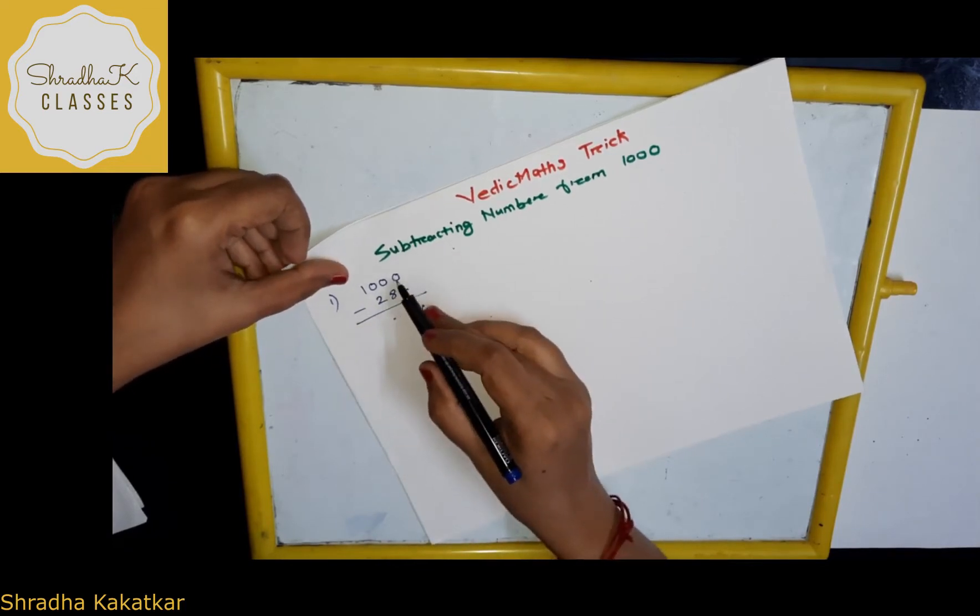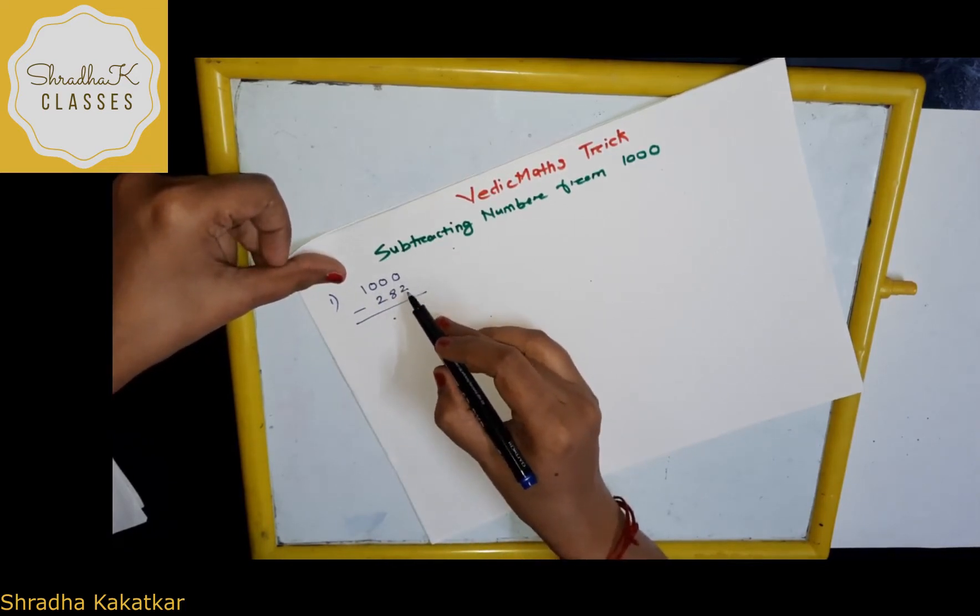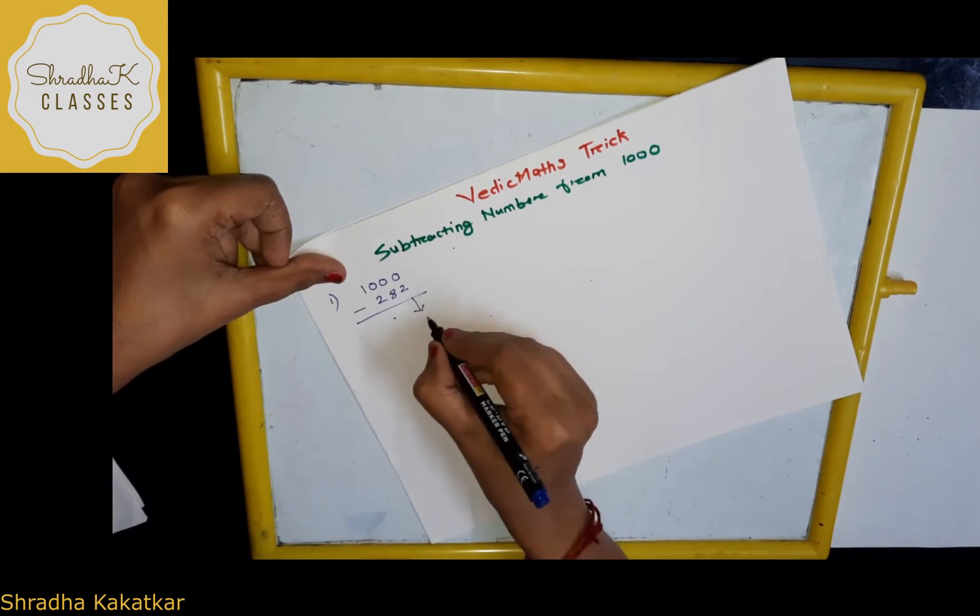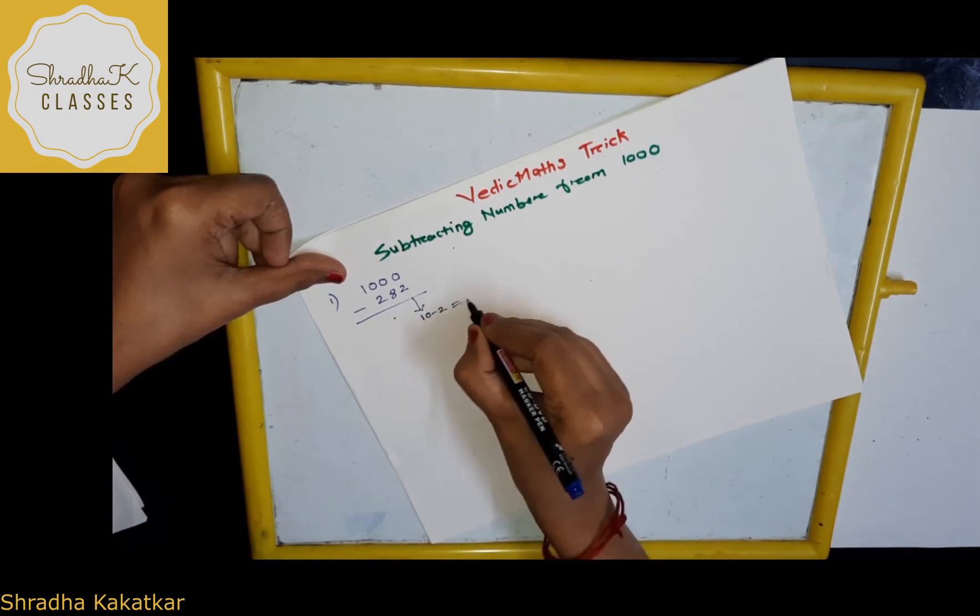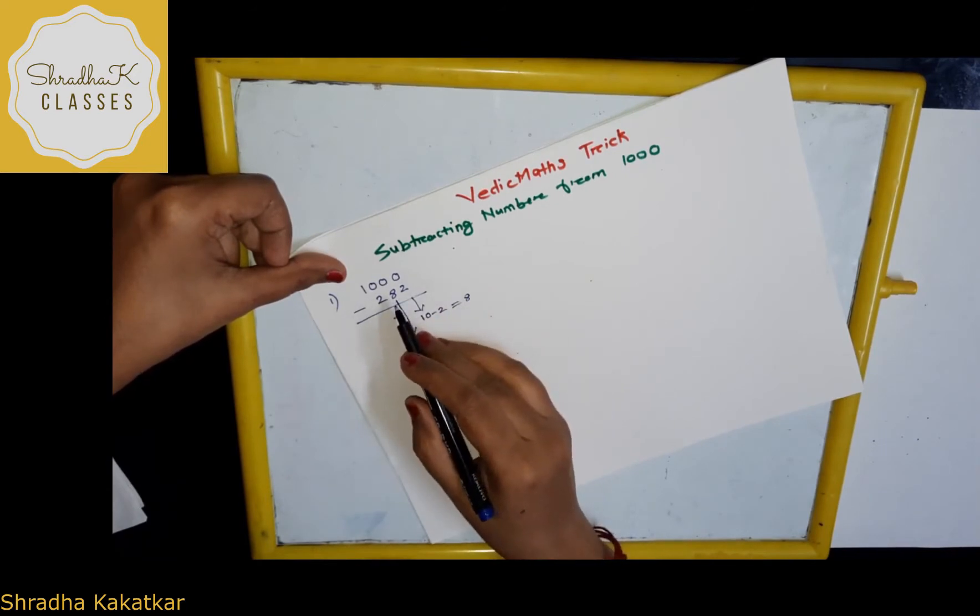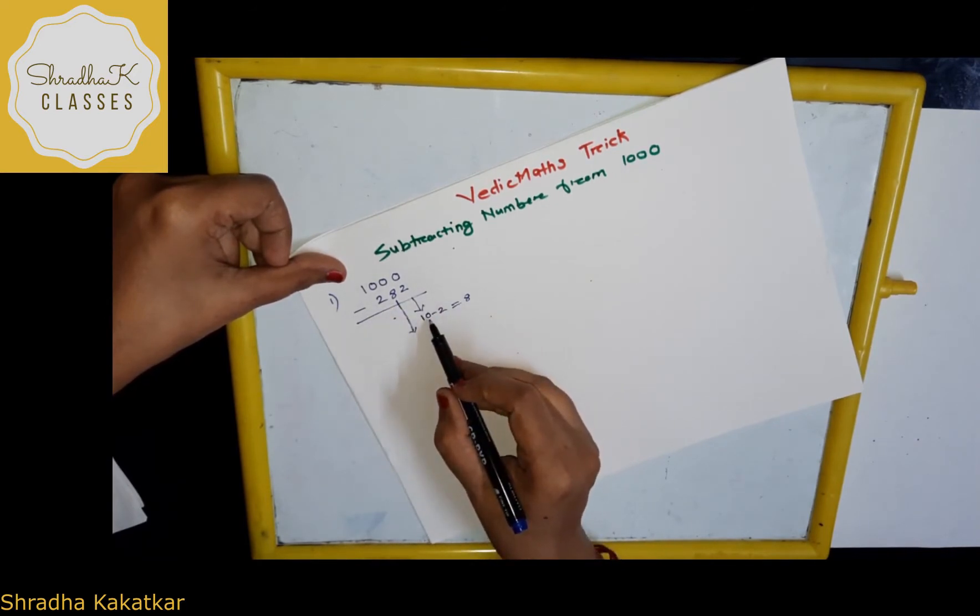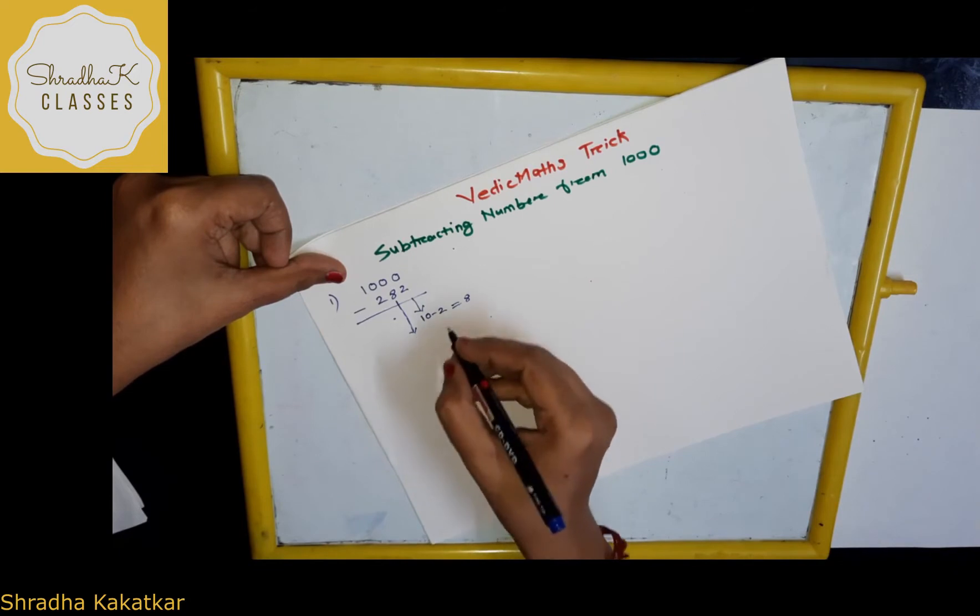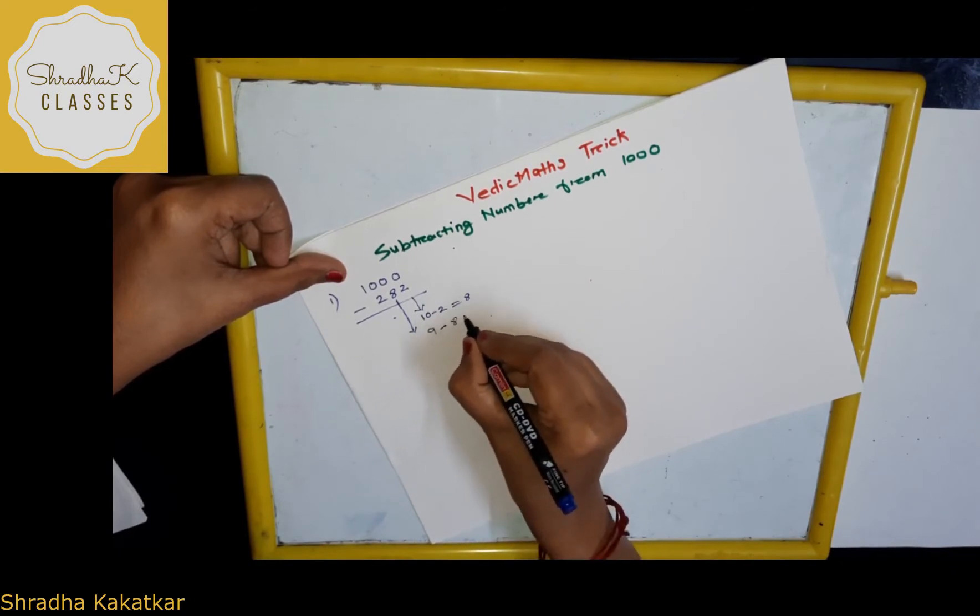Just see what I am doing. Here, what I will do is 10 minus 2, how much? 8, right? Next, next number is 9. Here, I took 10, the next number I am taking 9, 9 minus 8, 1.